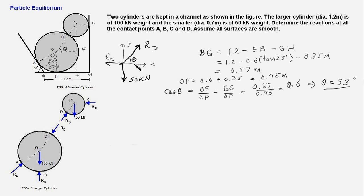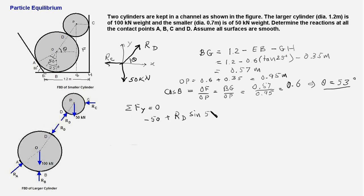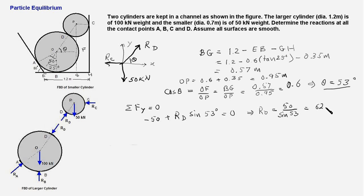Now that we know theta, we can write the equilibrium equations. Let us first take the equilibrium equation in the Y axis: ΣFy = 0. The components in the Y direction are −50 kN (the weight) and RD × sin 53° = 0. Therefore RD = 50 / sin 53°, which works out to 62.6 kilonewtons.